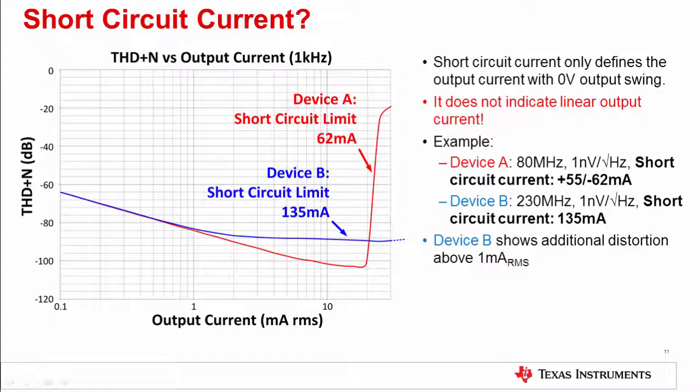The short circuit current limit is an internal op amp protection mechanism that prevents damage to the device when low resistance loads are connected to the output. Often, engineers mistakenly believe that the short circuit current limit provides a linear output current range. This is not the case. This plot compares the distortion for two different devices versus output current. You can see that device B has a much greater short circuit current limit, but begins to show additional distortion at about 1 milliamp of output current. Device A has a much lower short circuit current limit, but it can deliver more linear output current before the THD plus N curve becomes distortion dominated. For example, at 10 milliamps RMS, device A has almost 16 dB better THD plus N than device B. The main point here is that you cannot equate the short circuit current to a linear output current range.